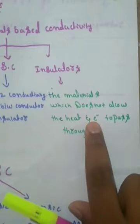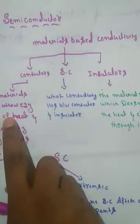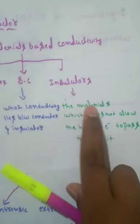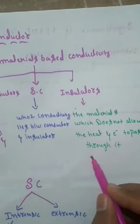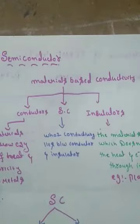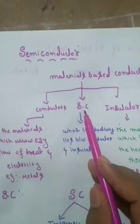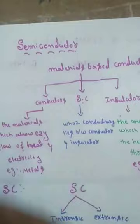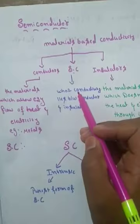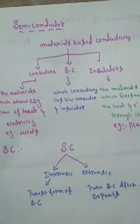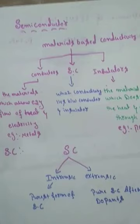Insulators are opposite to conductors — they are materials which do not allow heat and electricity to pass through them. Examples include plastic, wood, etc. Semiconductors have conductivity that lies between insulators and conductors. Such materials are called semiconductors. Nowadays, semiconductor materials are mainly used in electronic circuits, science, and technology.